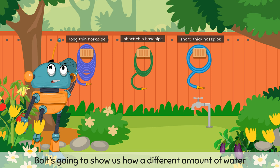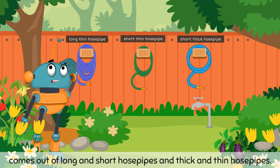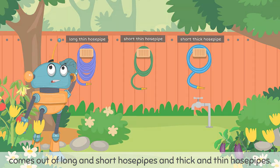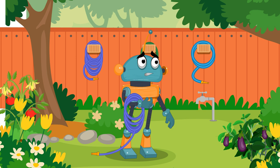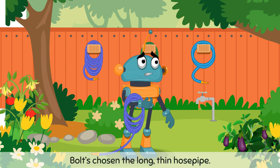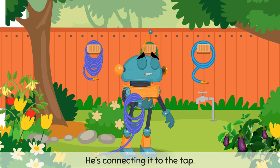Bolt's going to show us how a different amount of water comes out of long and short hosepipes and thick and thin hosepipes. Bolt's chosen the long, thin hosepipe. He's connecting it to the tap.